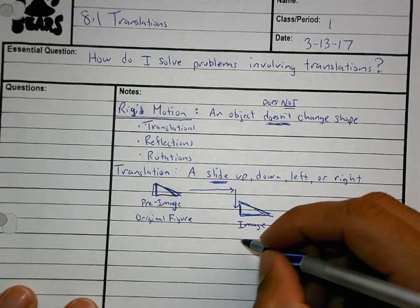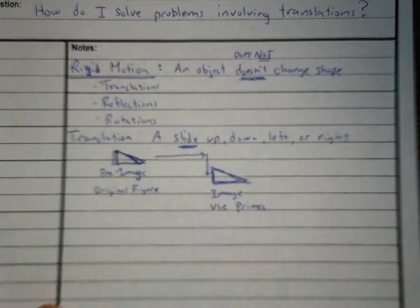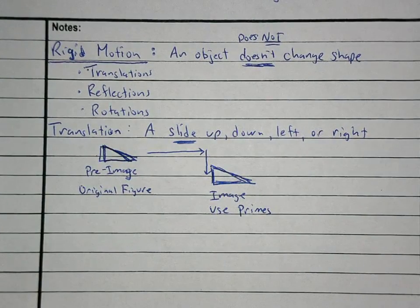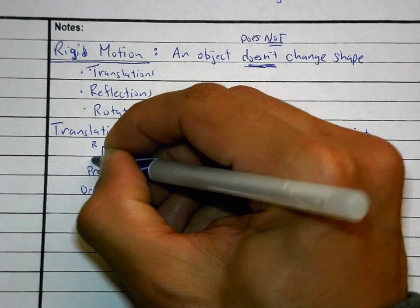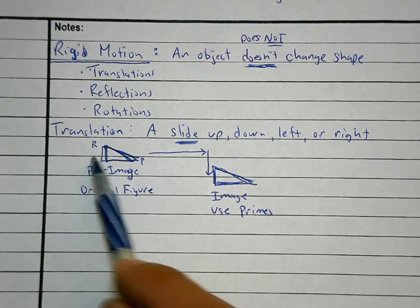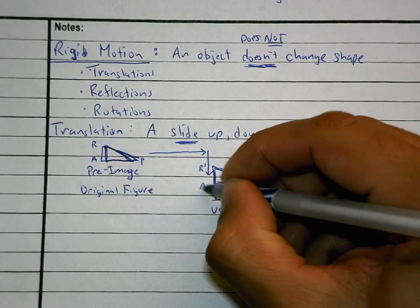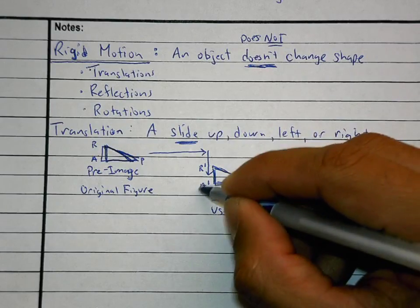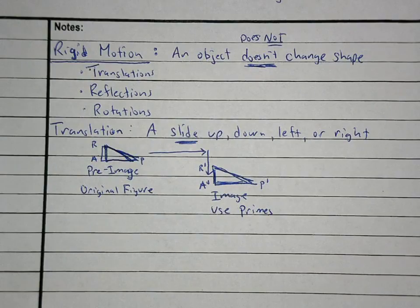A lot of times we use primes to let you know what the image is. For example, let's do triangle R-A-P. If this is my triangle R-A-P and I translate it to the right and down, this is my pre-image R-A-P. The image would be R-prime, A-prime, P-prime. These little apostrophes let you know that these are the new image after the translation — this is the object that has been moved, that has been slid somewhere else.